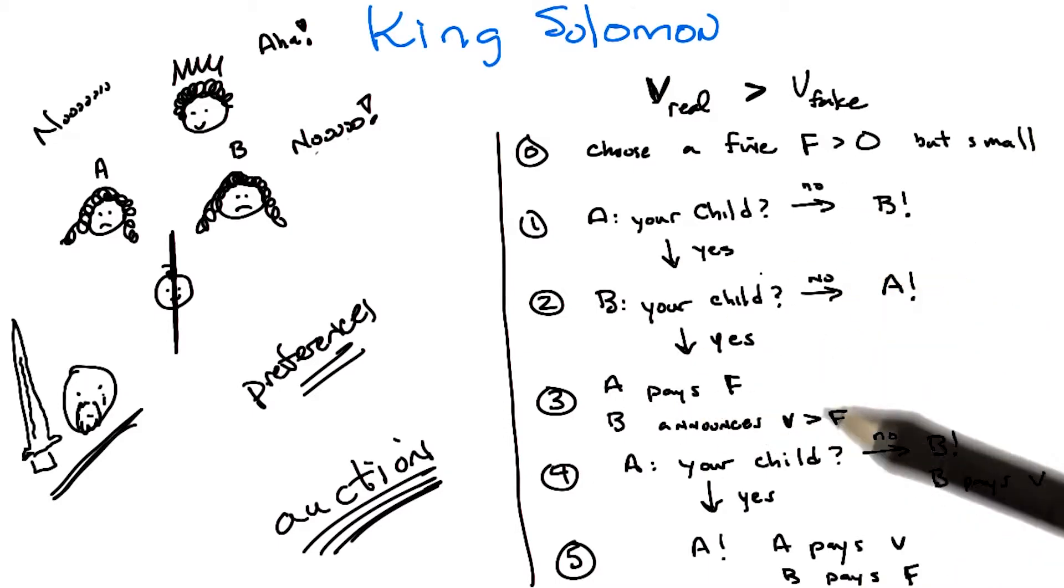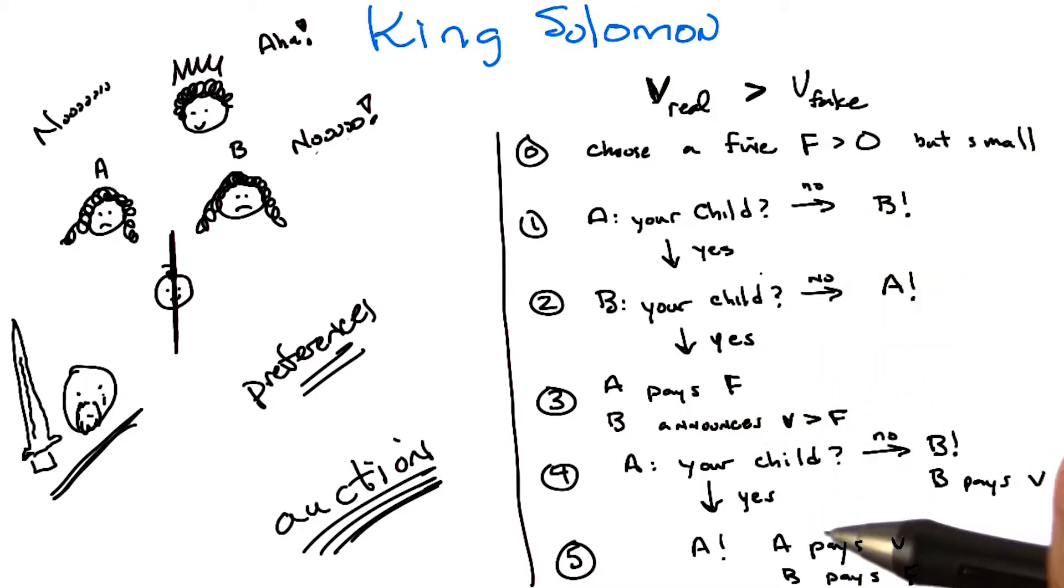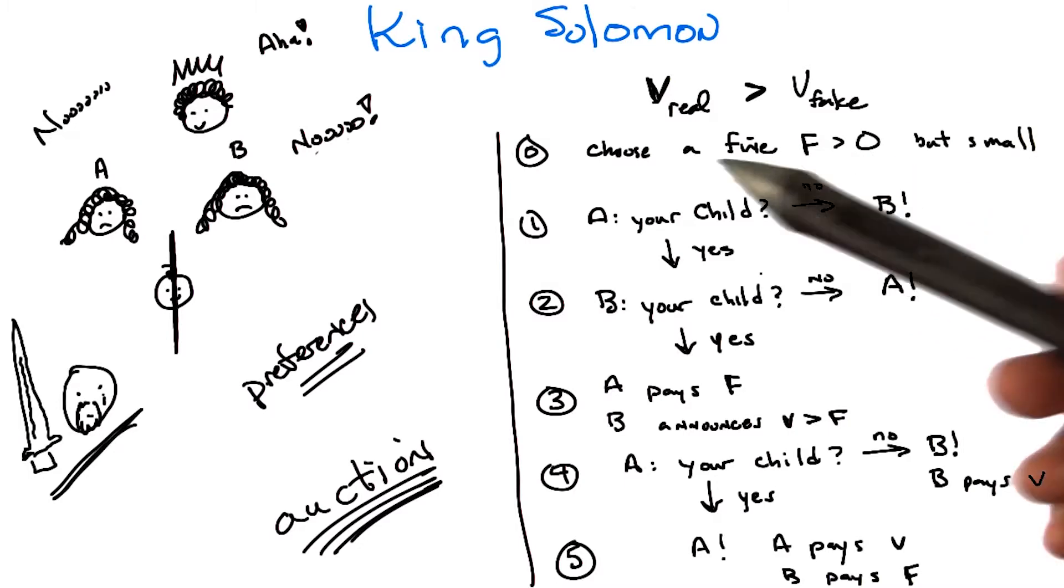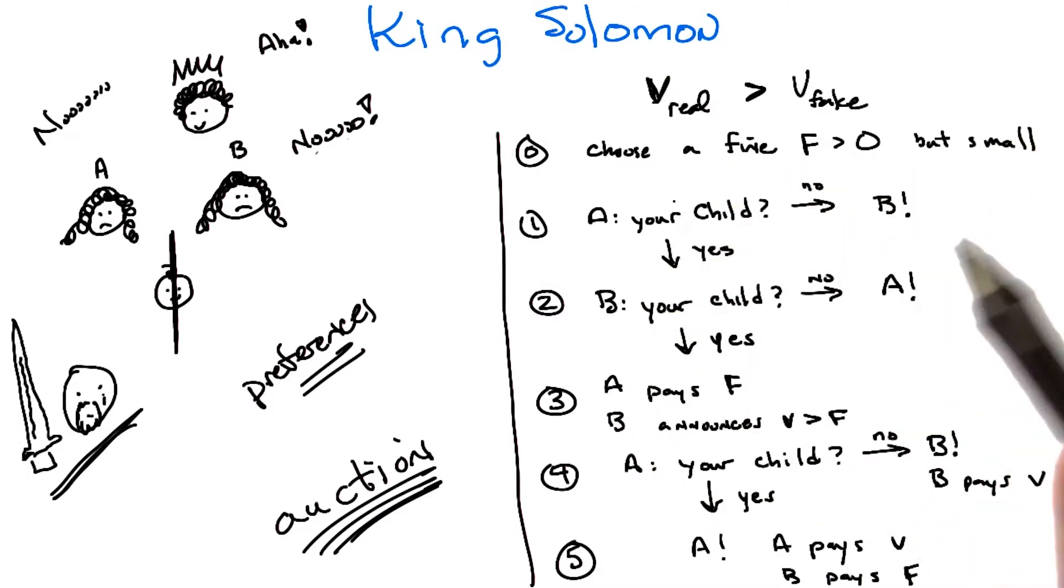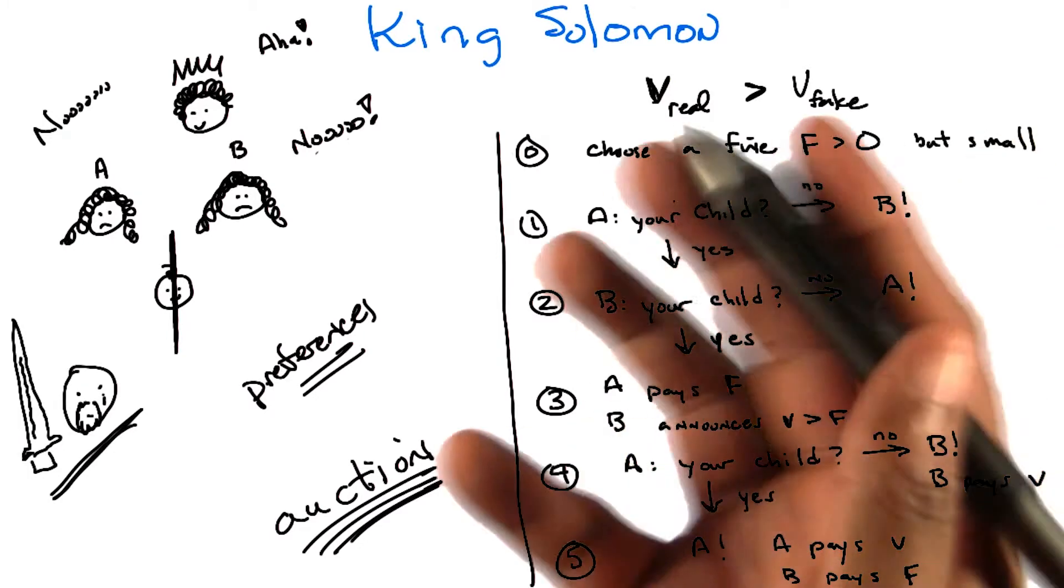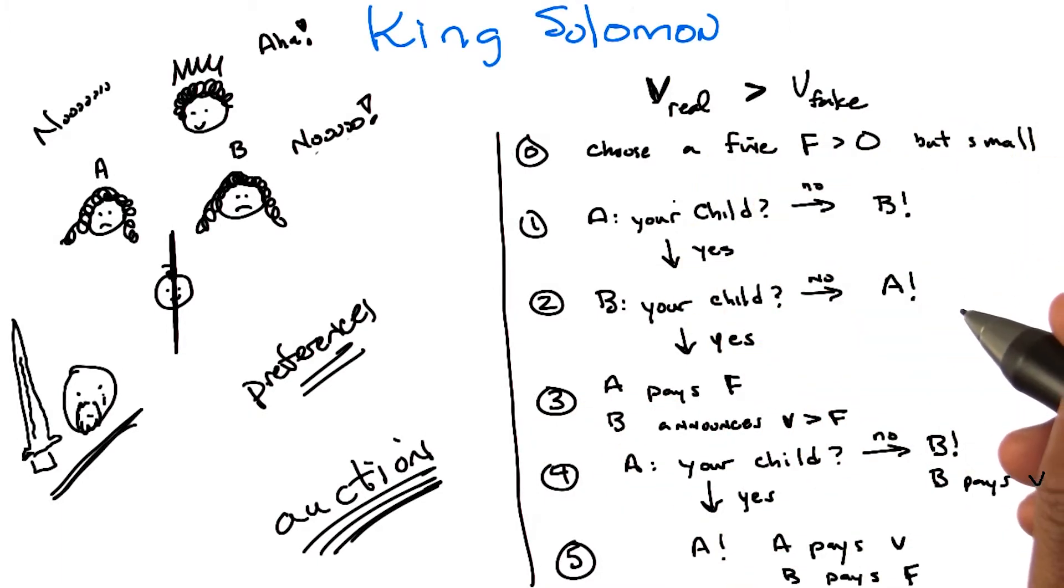You try to set up a structure so that people will basically pay what it is they really want, or at least will announce what it is that they really want. There are lots of variations on this. And in fact, some version very similar to this is sort of what eBay does, but without babies. But the baby in this case is the prize. E-baby.